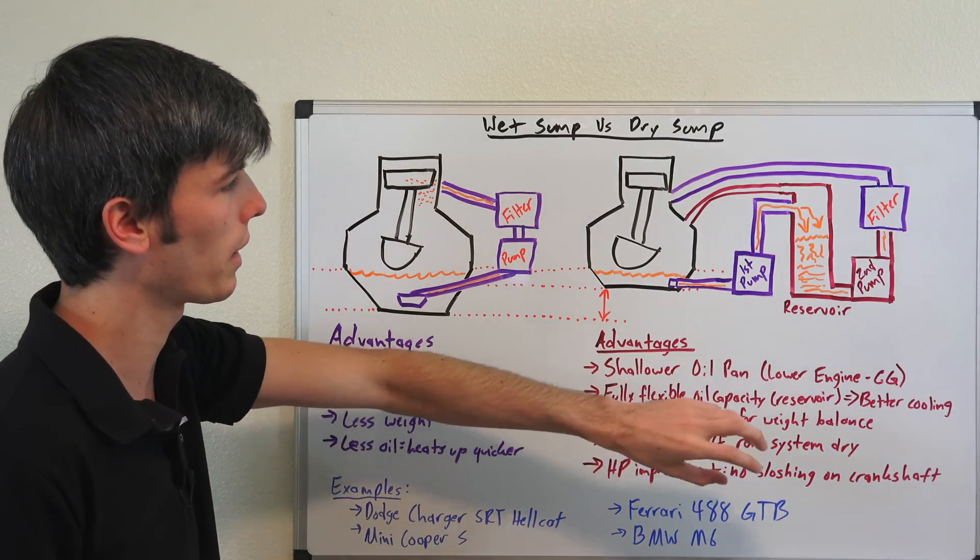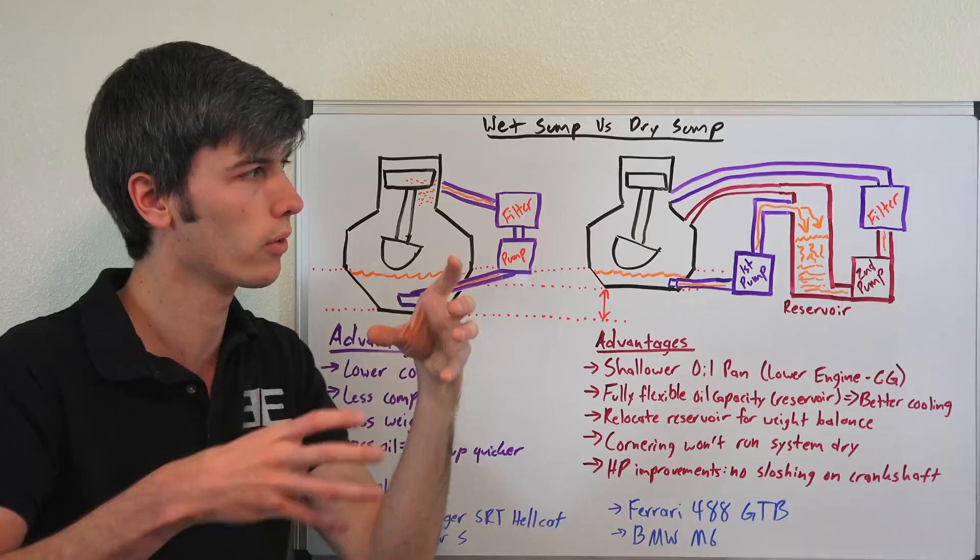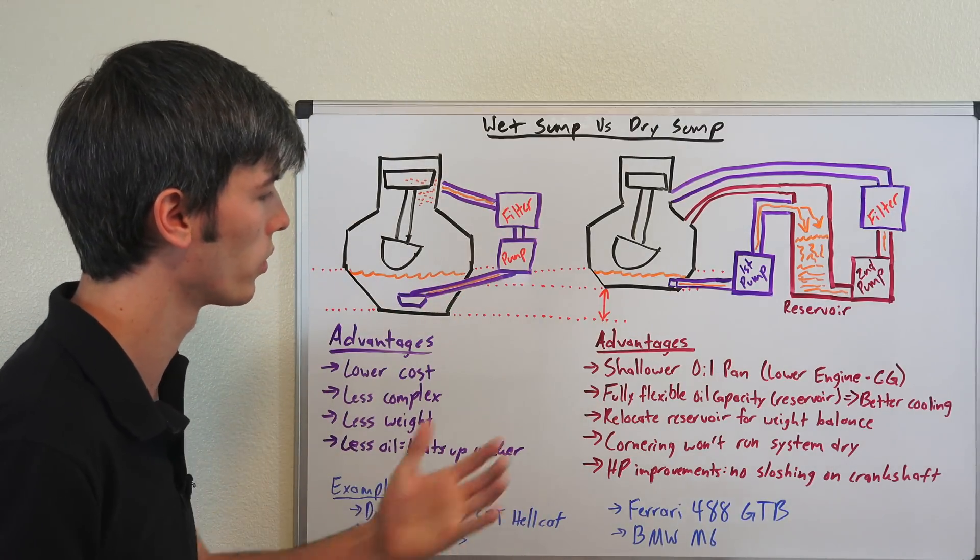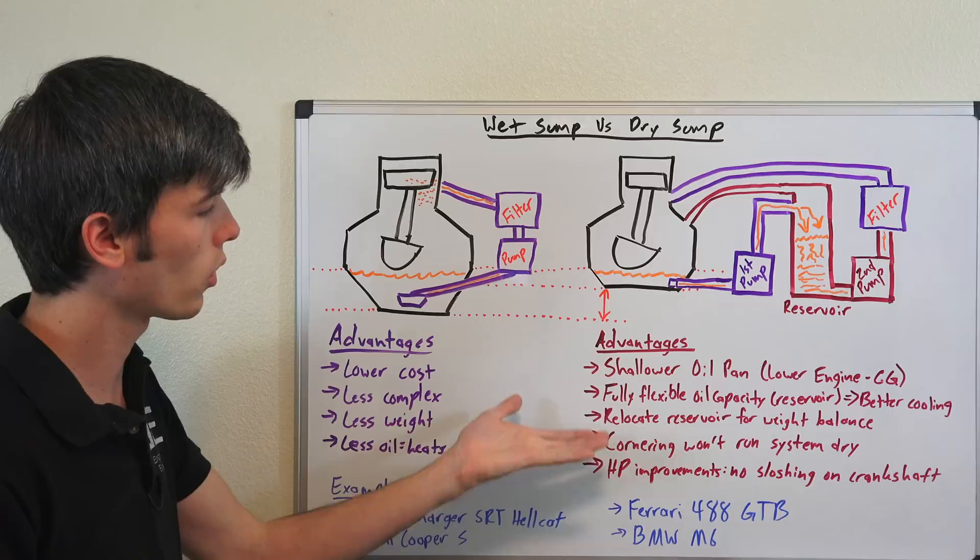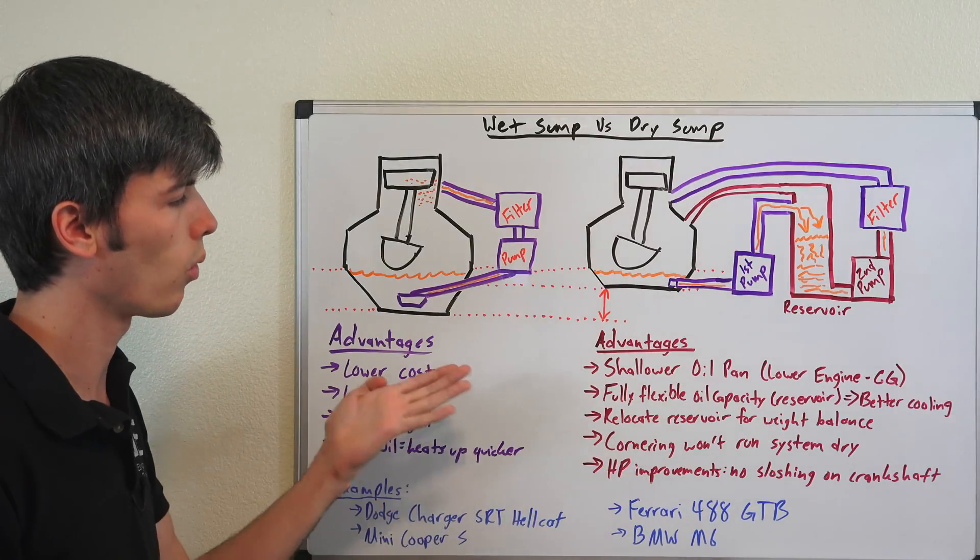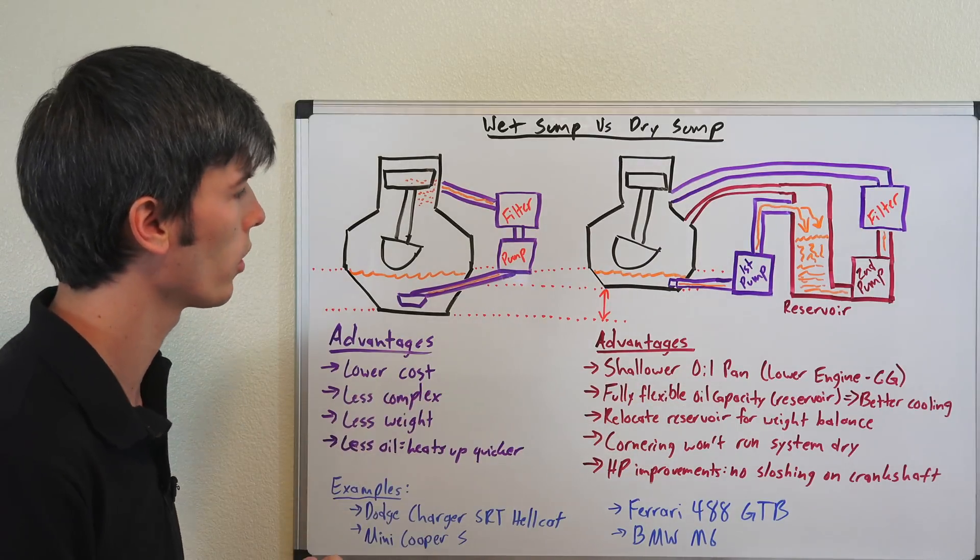So if you need a specific amount of weight located somewhere on the vehicle, you can do that by placing your oil reservoir there, gives you some flexibility. And also probably one of the biggest benefits of a dry sump system is that the system won't run dry while you're cornering.